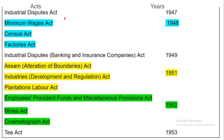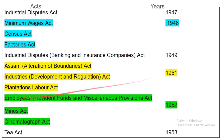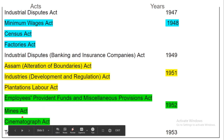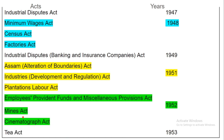Industrial Disputes Act was passed in 1947. Minimum Wages Act, Census Act and Factories Act — these three acts passed in 1948. Industrial Disputes Banking and Insurance Companies Act was passed in 1949. Assam Alterations of Boundaries Act, Industrial Development and Regulation Act, and Plantation Labour Act — these three acts passed in 1951. Employees Provident Fund and Miscellaneous Provisions Act, Mines Act and Cinematography Act — these three acts passed in 1952.